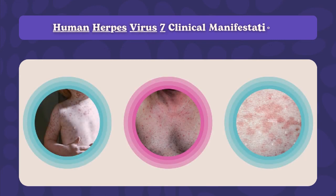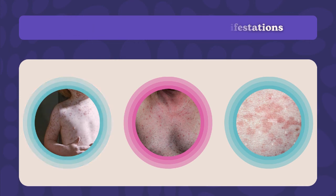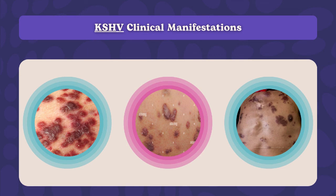Human herpesvirus 7 (HHV-7) is closely related to HHV-6 and is also linked to roseola, and can cause seizures and other central nervous system symptoms in children. Human herpesvirus 8 (HHV-8), also called Kaposi's sarcoma-associated herpesvirus (KSHV), belongs to the human gamma herpesvirus family. It is one of seven known oncoviruses — viruses that can cause cancer. Specifically, HHV-8 causes Kaposi's sarcoma, usually seen in individuals with AIDS. Clinical manifestations include fever, mild upper respiratory symptoms, and a maculopapular rash.